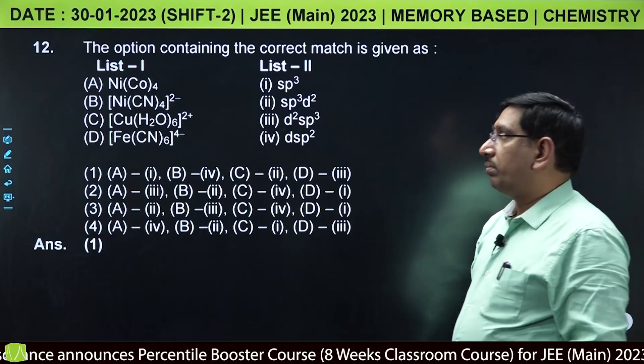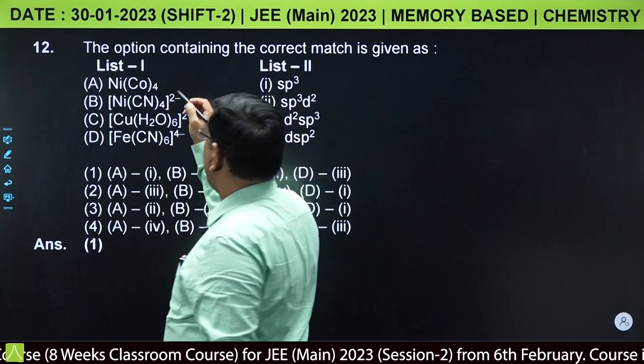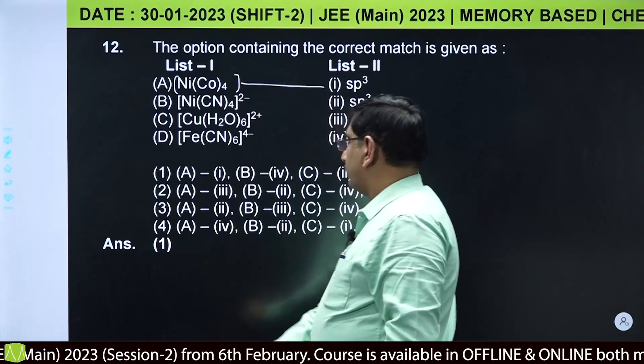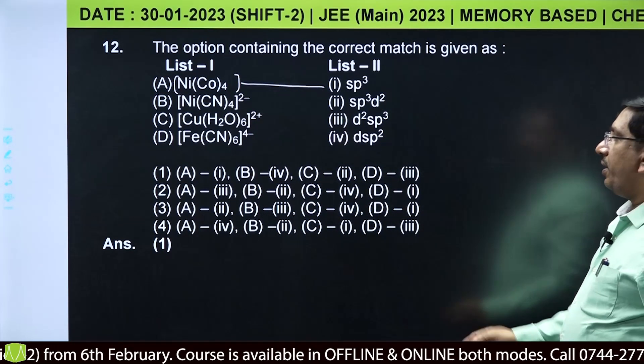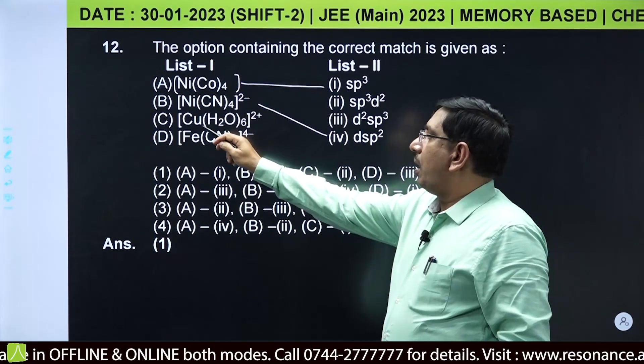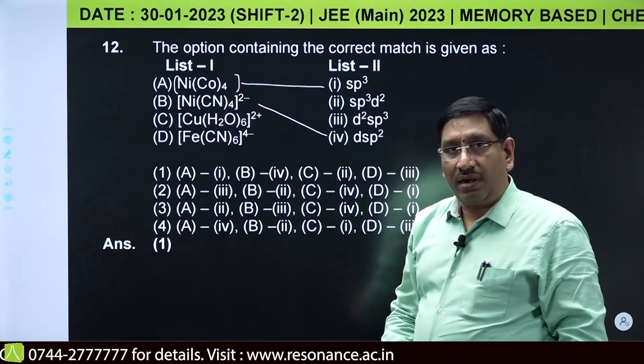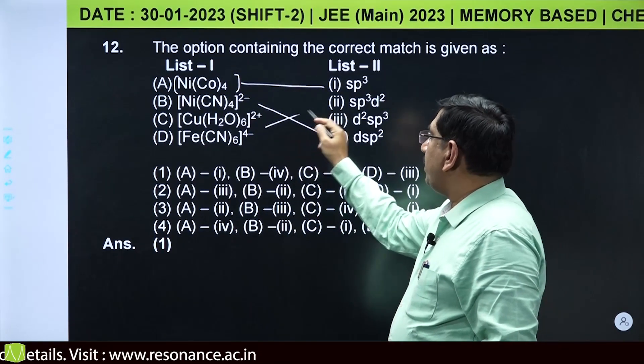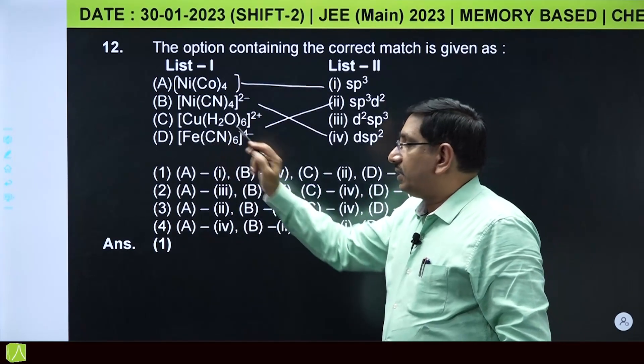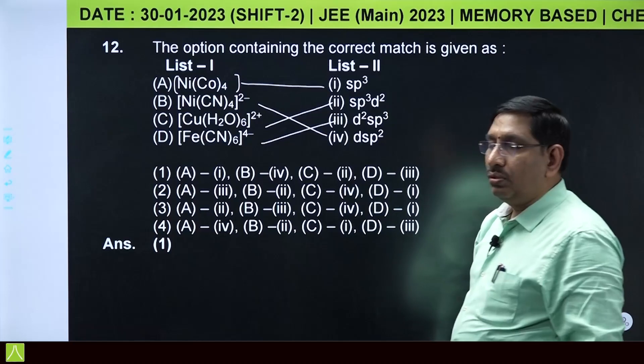This is also from complex compounds. Match the hybridization for the given complexes. Nickel tetracarbonyl has sp3 hybridization. Nickel tetracyanide is dsp2 hybridization because it's a strong field ligand with coordination number 4. The copper complex is octahedral with weak field ligand and d9 configuration, so it is sp3d2 hybridization. Fe(CN)6 4 minus: CN minus is a strong field ligand, iron is in plus 2 state with 3d6 configuration, so it is d2sp3 hybridized.